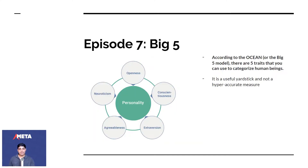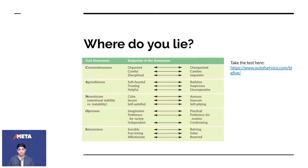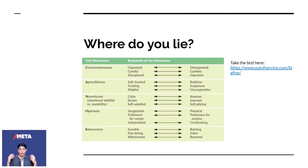The Big Five stands for: Openness, Conscientiousness, Extroversion, Agreeableness, and Neuroticism. There are endpoints — you can either be low conscientiousness or high conscientiousness. People who are high conscientiousness are basically hardworking or diligent — they're organized, careful, and disciplined. And people who are low conscientiousness are disorganized, careless, and impulsive.